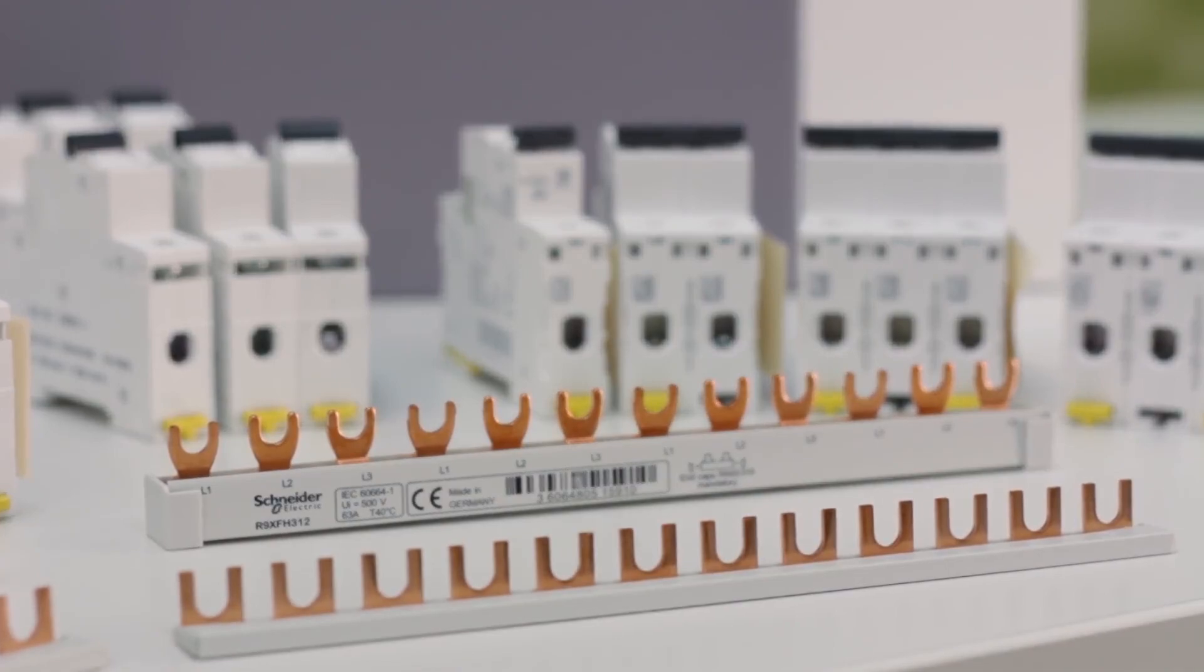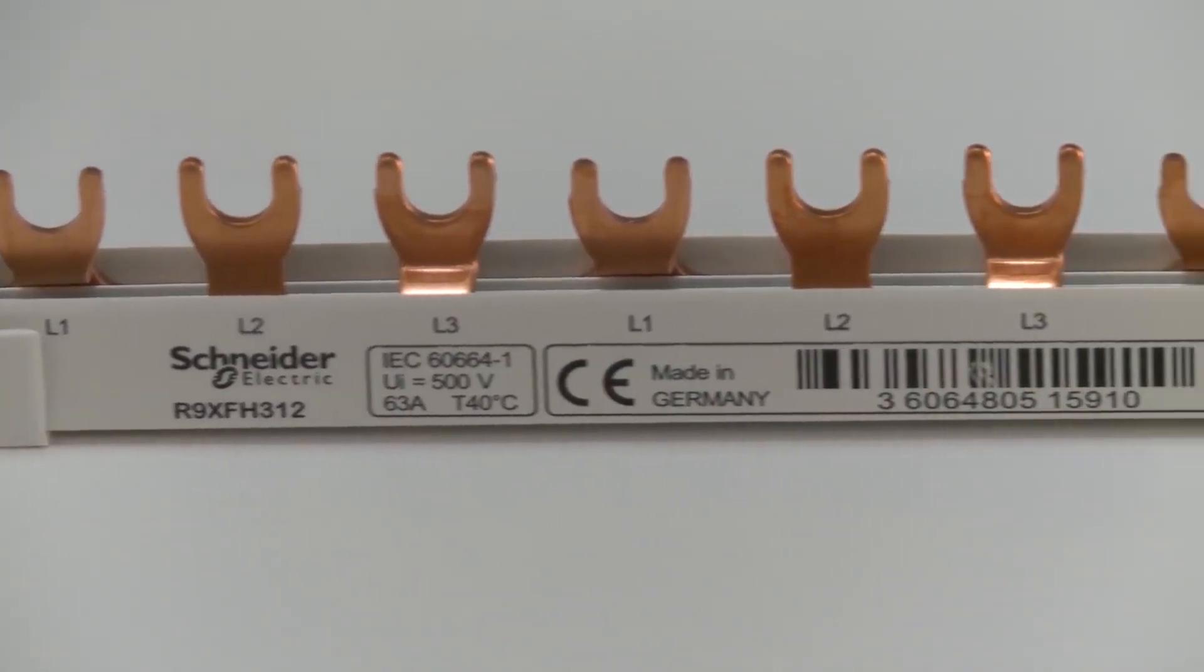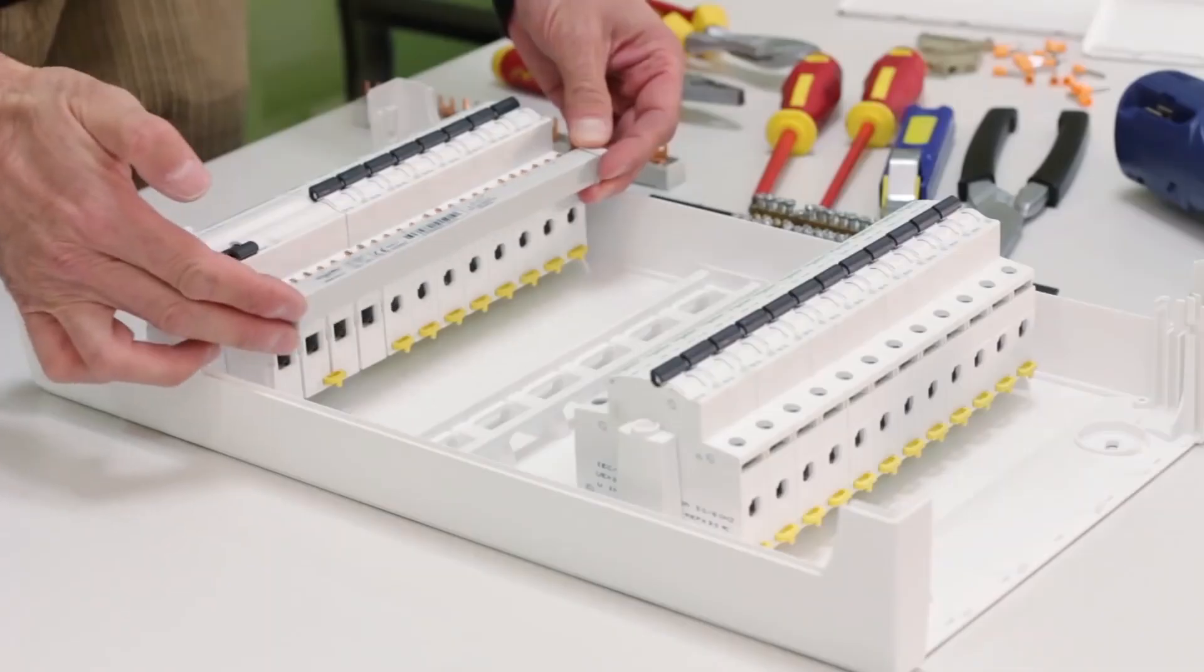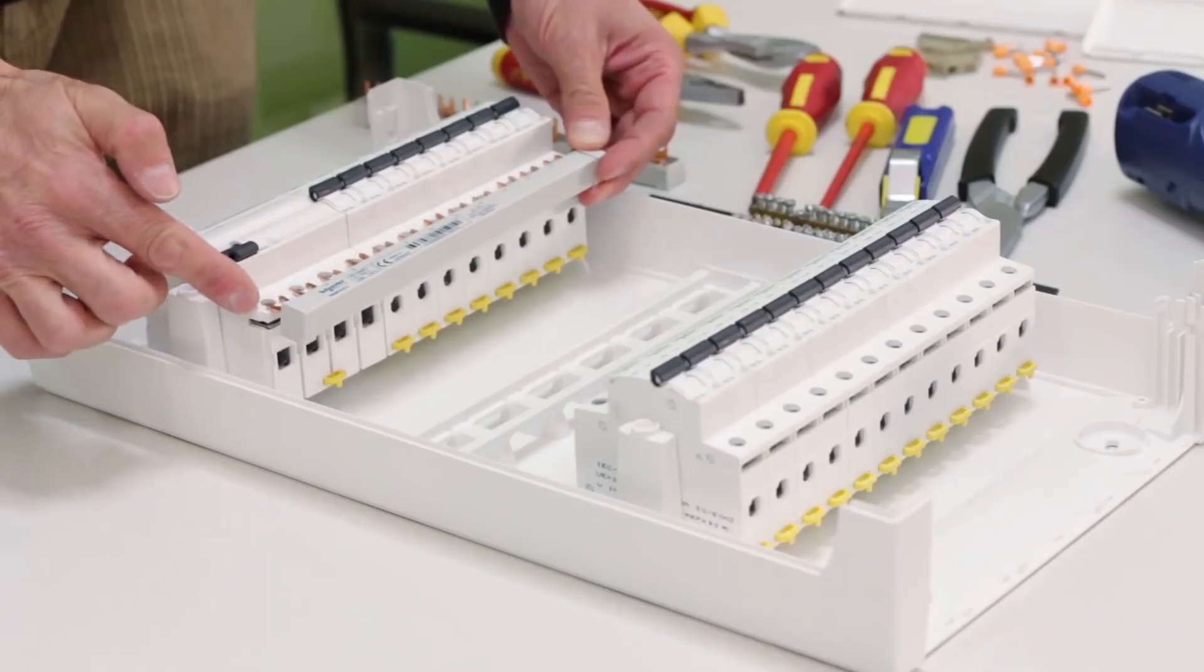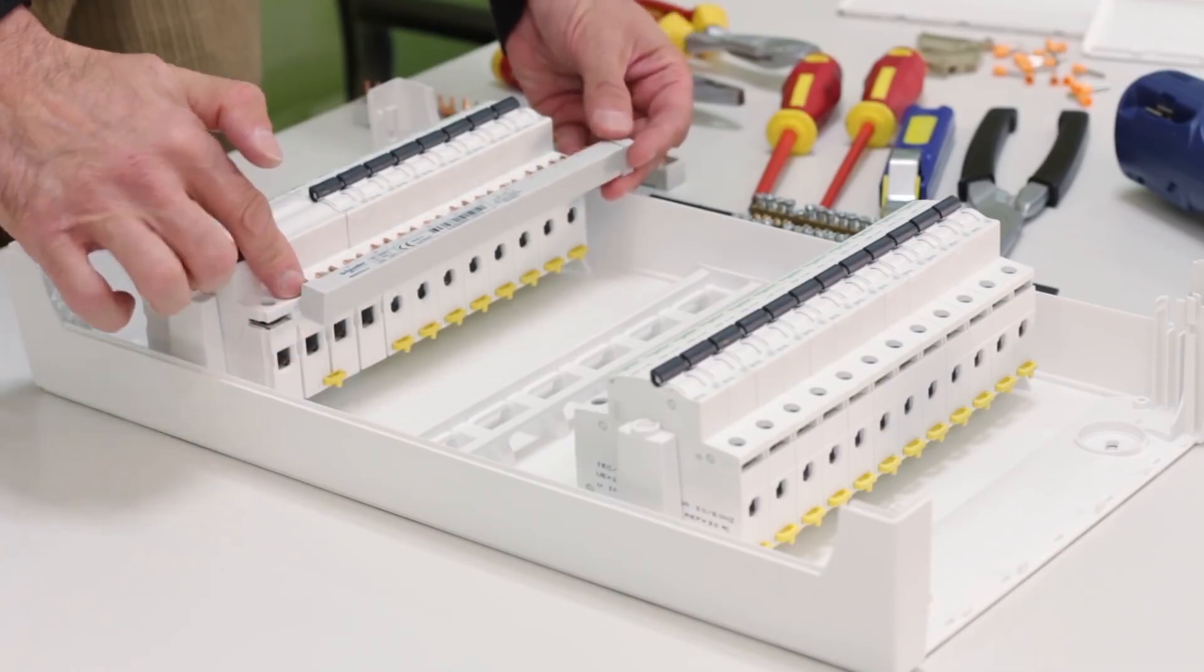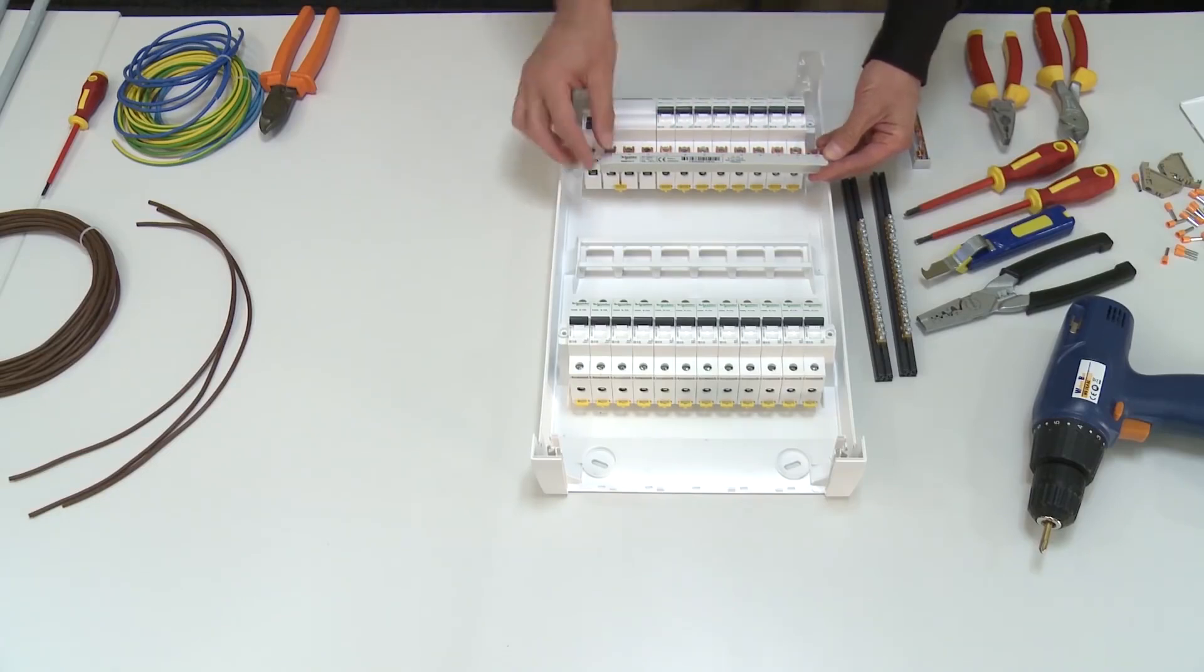We are approaching the installation of a comb bus bar which is 12 places long but we take care that we don't start from the very beginning because that's a place for a neutral conductor. So we start from the L1 phase and see that one tooth is excess so we have to remove it.